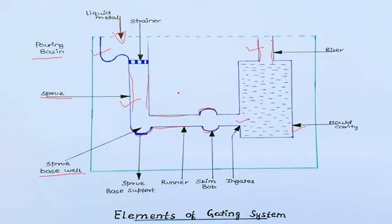Another element of the gating system is the strainer, placed at the top of the sprue. The strainer is used to remove impurities. It is made using ceramic material with high porosity. These are the elements of the gating system.